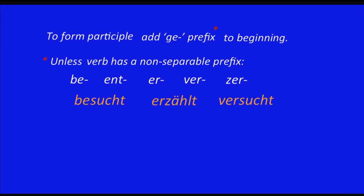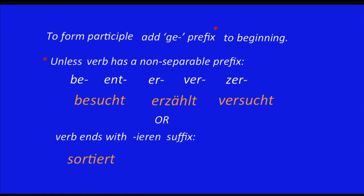But there's also another time when we don't add a GE prefix. Verbs that end with the -ieren suffix. You know these — like 'sortiert', 'fotografiert', 'studiert', and there are many more. Notice that those participles don't have the GE in front.